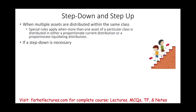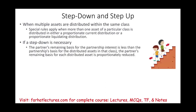We could have a step-up or a step-down. What does that mean? Step-down: the partner's remaining basis — whatever remaining basis we have for the partnership interest — is less than the partnership basis for the distributed asset in that class. So if, say, the remaining basis is $35,000 but the partnership's basis in the distributed assets is $40,000, the partner's remaining basis for each distributed asset is proportionally reduced.